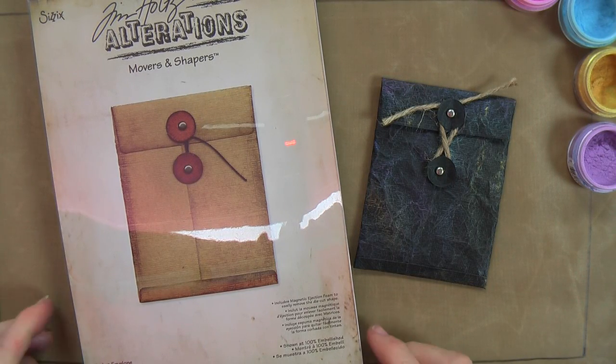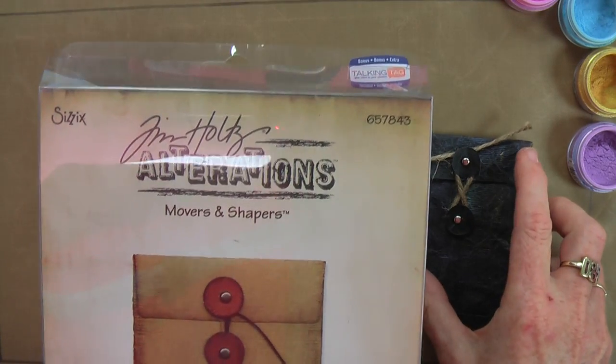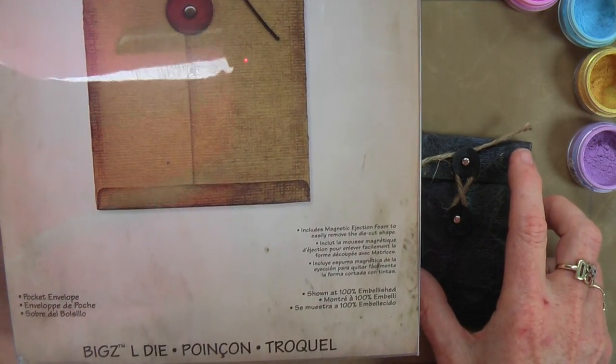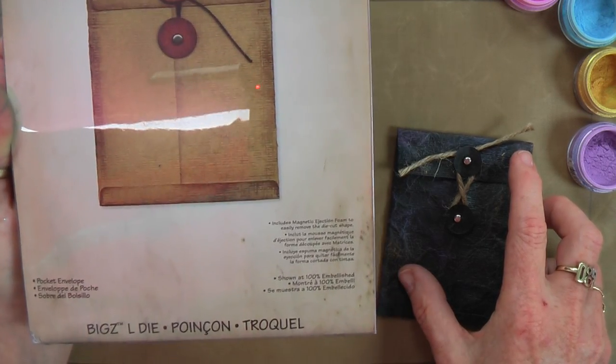Welcome to Technique Tuesday with Scotty Crafts and Wendy. Today I'm going to make the little alterations pocket envelope. So this is using a Sizzix die through the Big Shot machine.